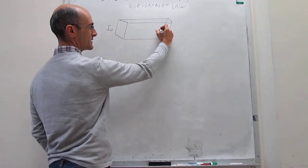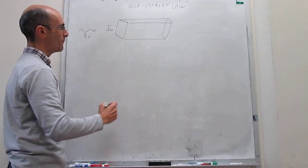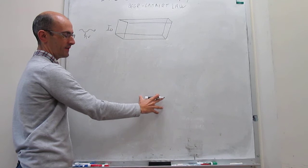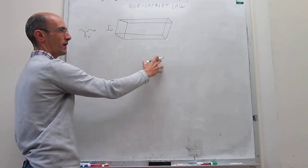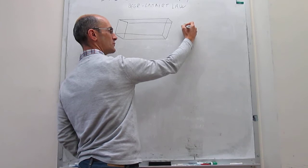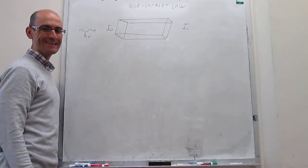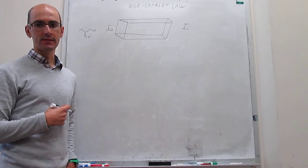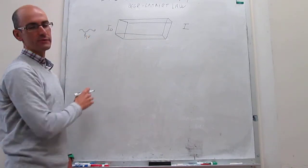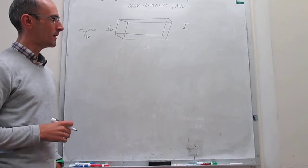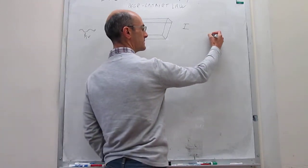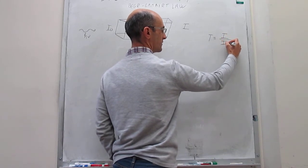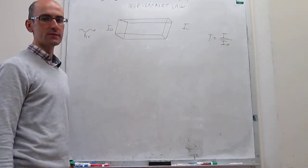After the photons cross the sample, some of them might be absorbed by the sample, and the system will go from a low energy state to a high energy state. Because those photons get absorbed, you get an intensity at the end of the cuvette that is lower than the initial intensity I₀. We define the transmittance as the intensity at the end divided by the initial intensity.